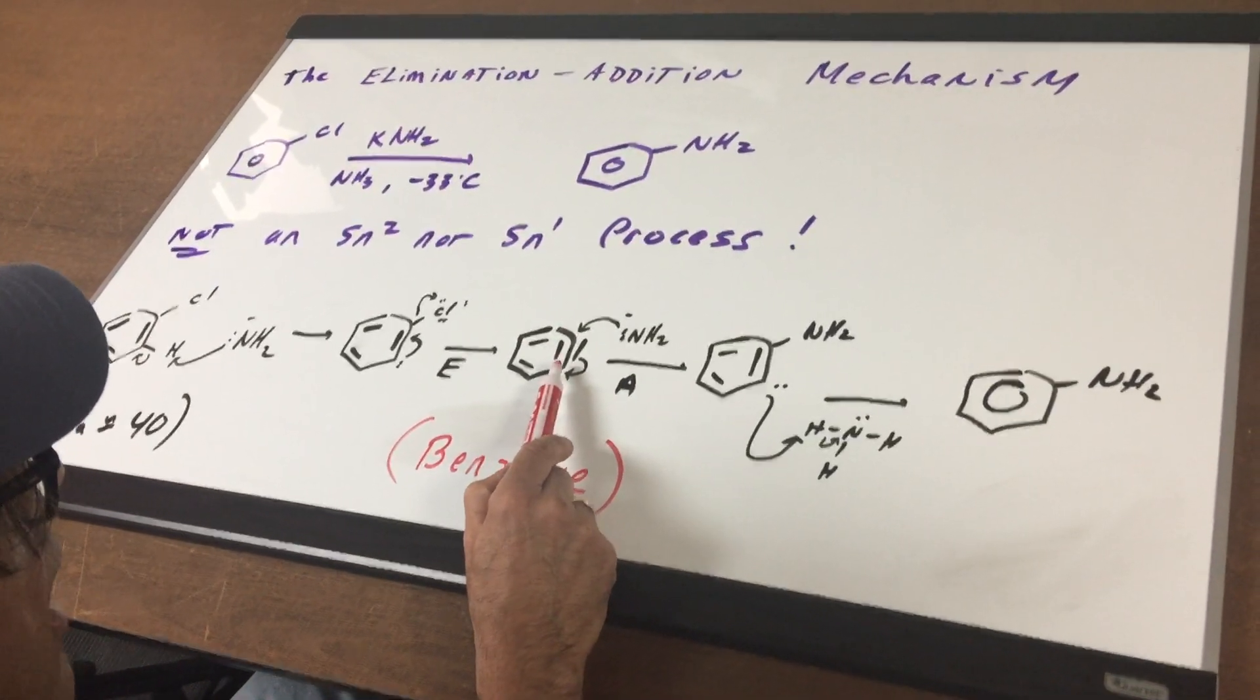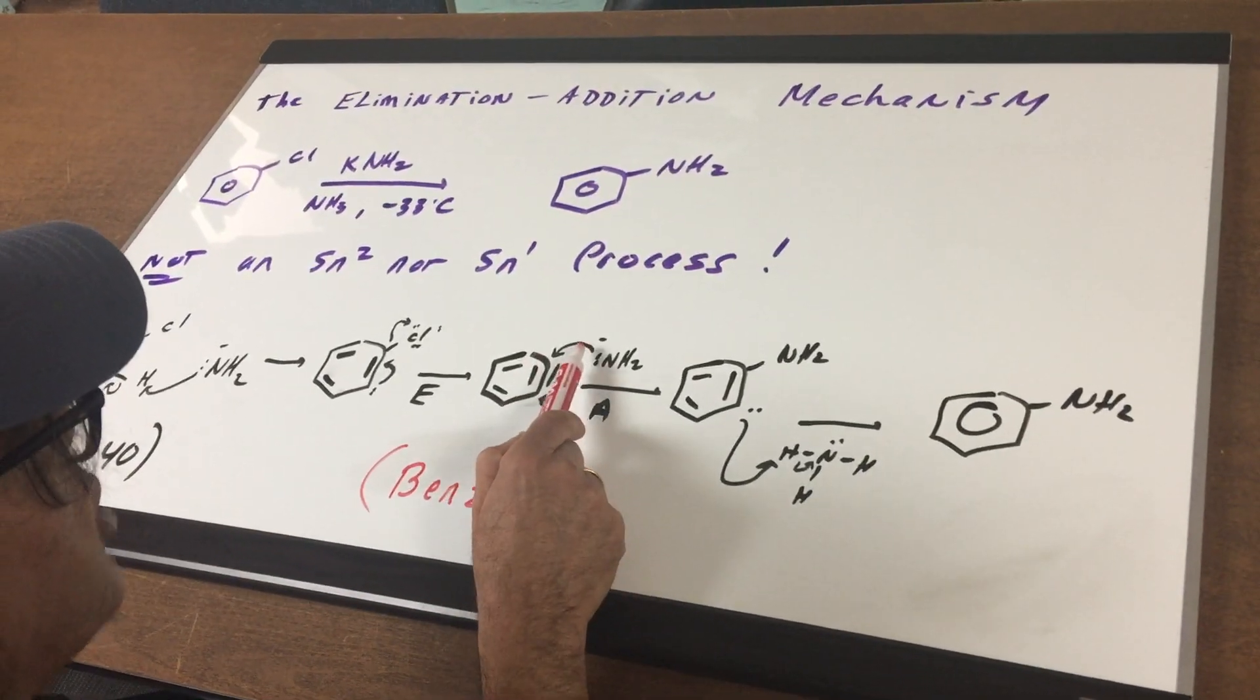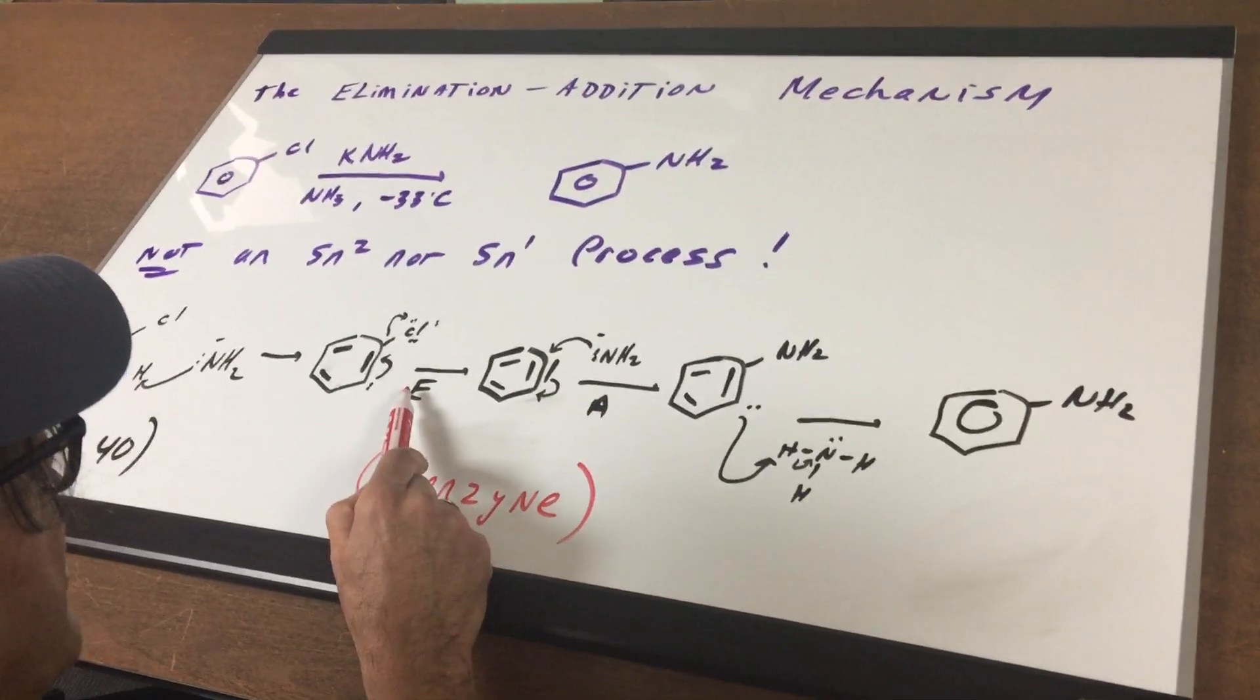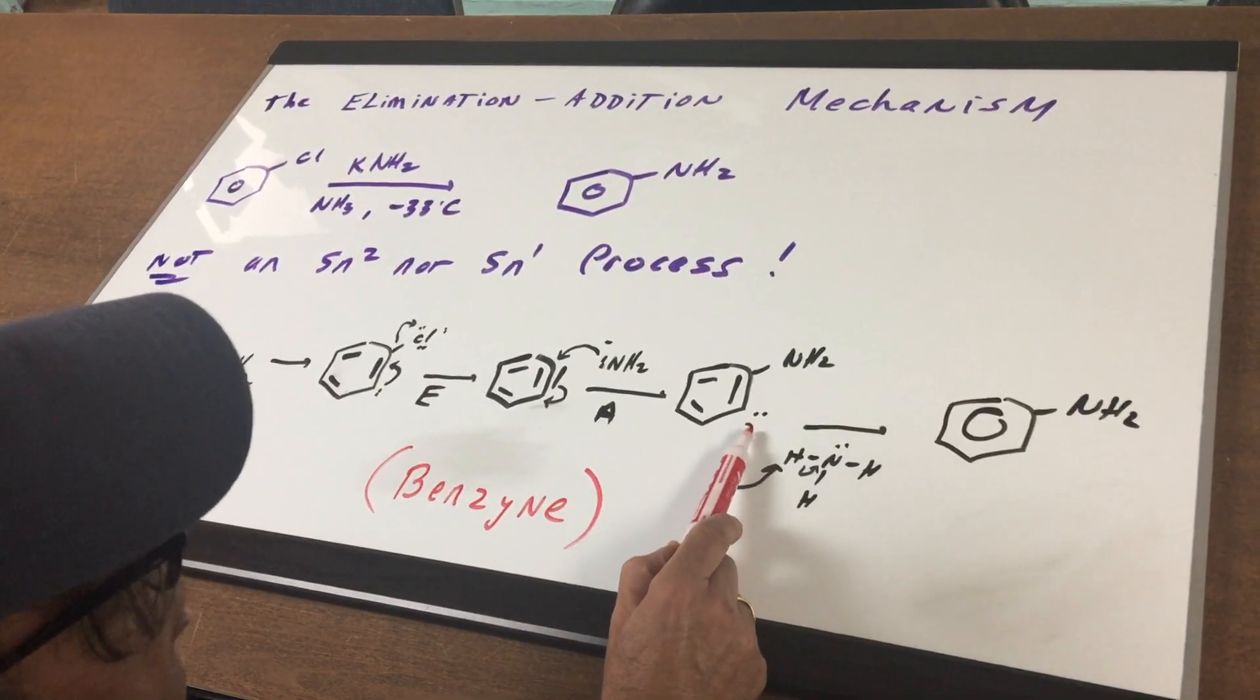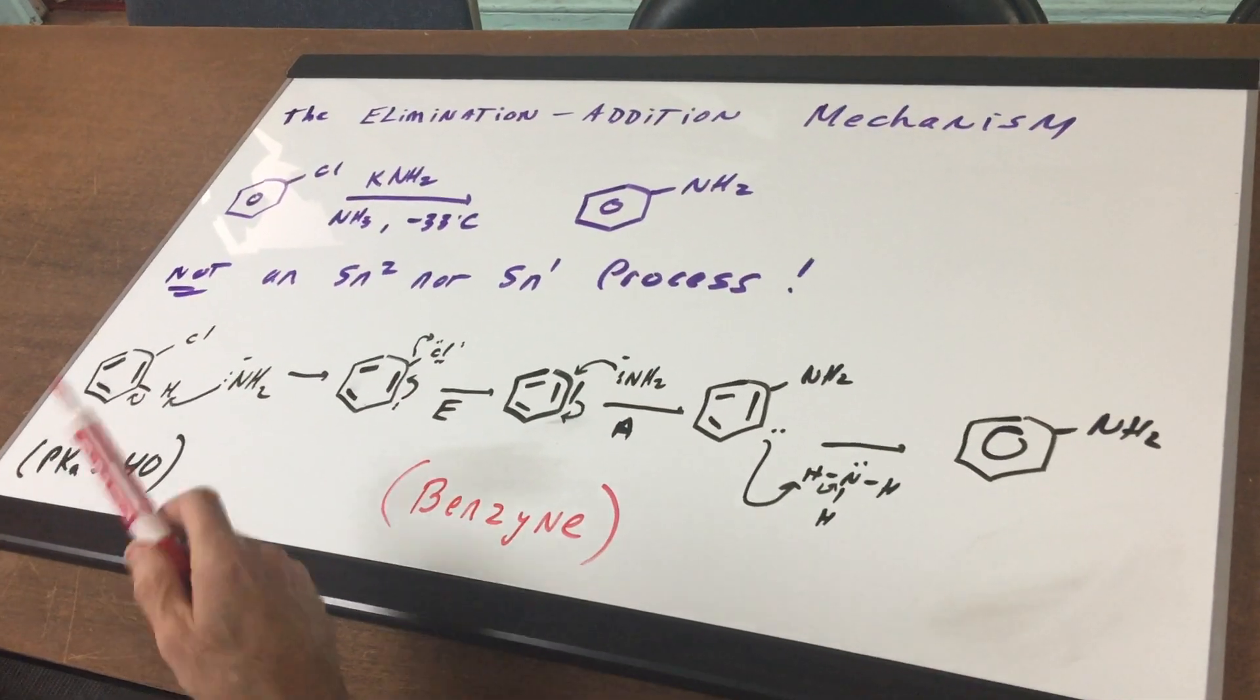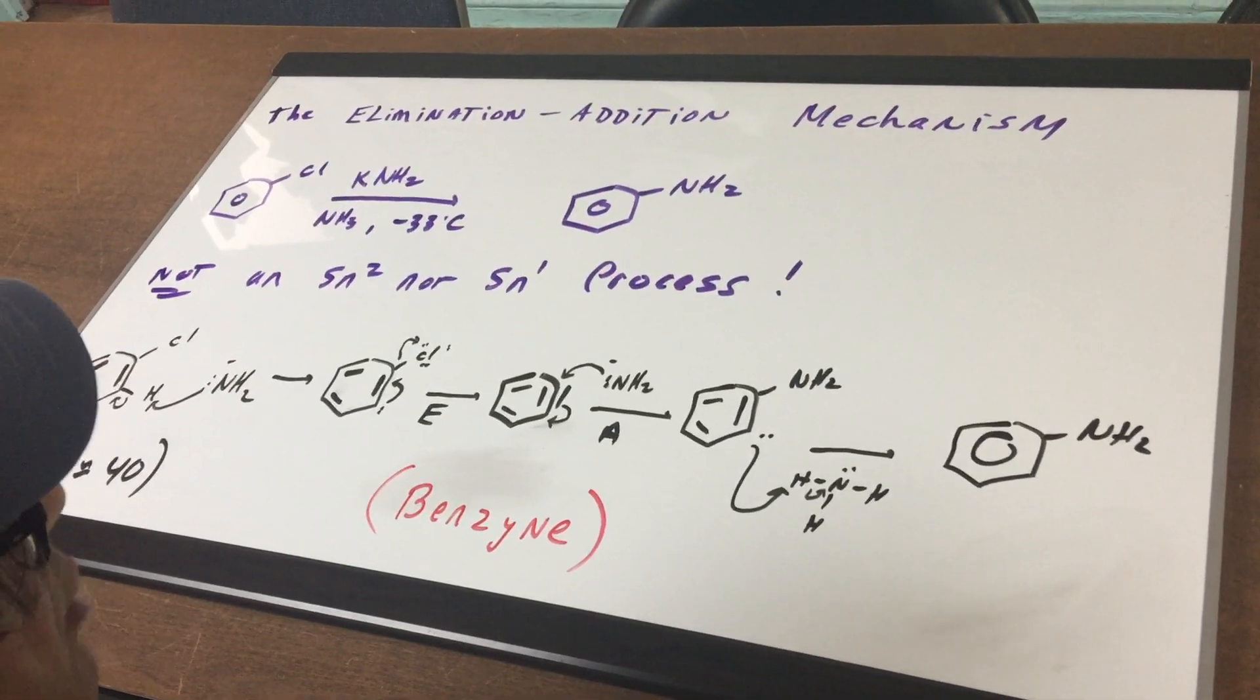Doesn't matter which one. These are equivalent. So if the NH2 attacks and this bond moves out, this is the addition step. So we did an elimination. Now we do an addition. And then all we do is pick up an H from the ammonia solvent and that would make aniline. So I've gone from chlorobenzene to aniline using this elimination-addition mechanism.